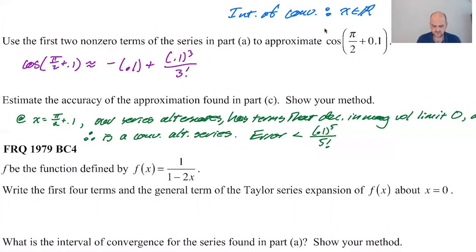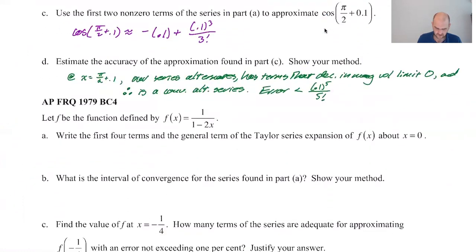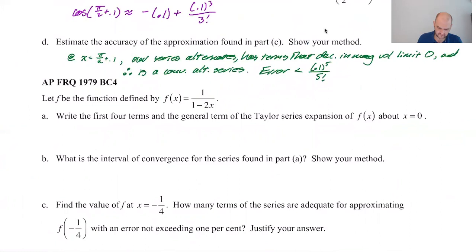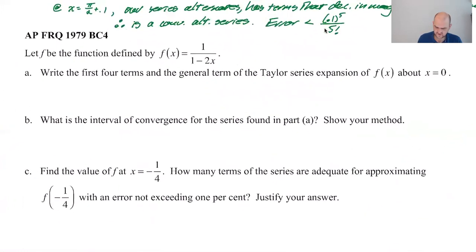So that's how accurate we are. We are within 0.1 to the fifth over five factorial. Think about how, we're very close. We're like basically right there. So I'm just going to do this one.